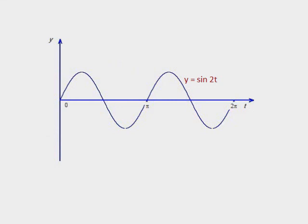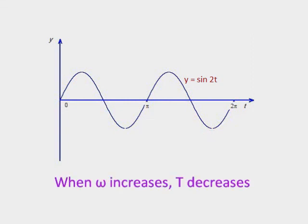The equation of this sine wave is Y equals sine of omega t. We can see that the periodic time of the sine wave has been halved. This shows that as angular velocity increases, periodic time decreases.